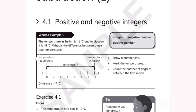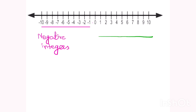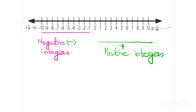Do you know what integers are? Let's understand with a number line. There are some negative numbers and some positive numbers. The negative numbers are called negative integers and positive numbers are called positive integers. Integers cannot be decimal or fractional — they can be simple numbers only, either positive or negative.